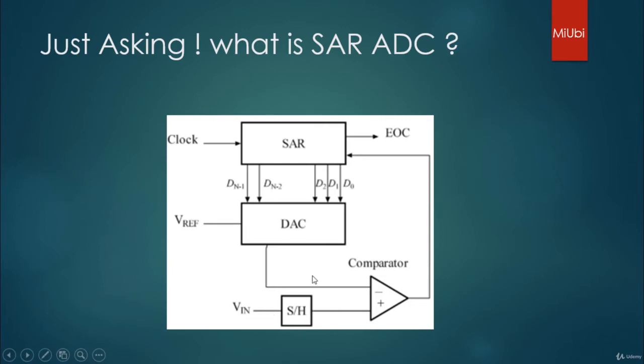DAC gives you out an approximate digital value. DAC gives you out an analog input. Now this analog input and your actual input are compared at the comparator. It is given to SAR. Now SAR checks whether the comparator value is nearby to the digital value or not. If it is nearby, it will stop comparison.